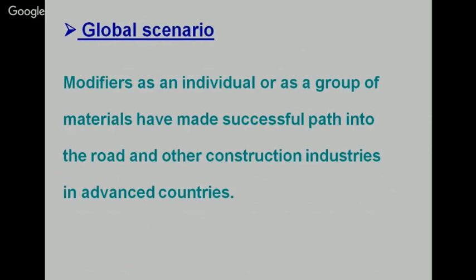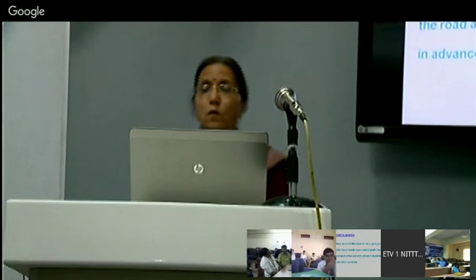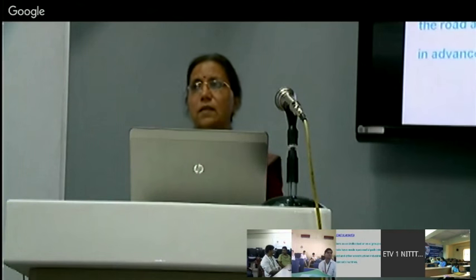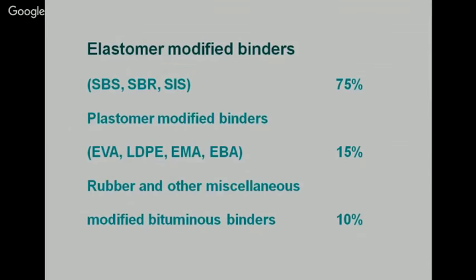Global scenario: modifiers can be used individually or as a group — more than two modifiers can be combined to produce modified binders. In advanced countries, elastomer-type polymers dominate at 75% (SBS, SBR, SIS), plastomer modified at 15%, and other miscellaneous rubber modified binders at 10%.